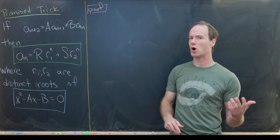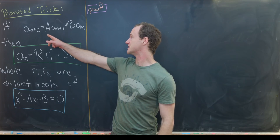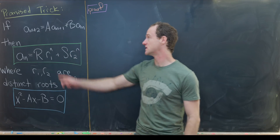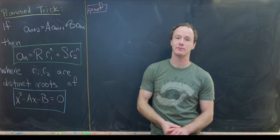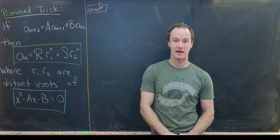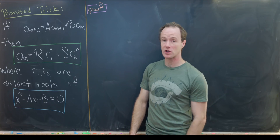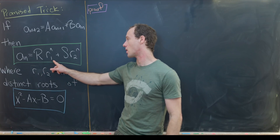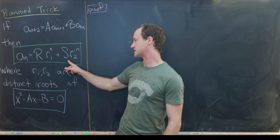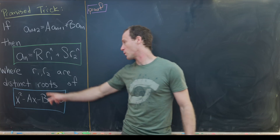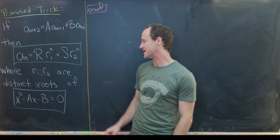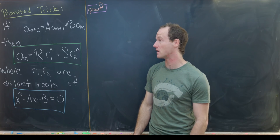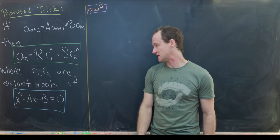Let's recall what we did back then. If we have this recursively defined sequence a_{n+2} = A·a_{n+1} + B·a_n, then we know the closed form of this sequence a_n is of the form R·r₁ⁿ + S·r₂ⁿ, where r₁ and r₂ are the distinct roots of the characteristic polynomial related to this recursive sequence.